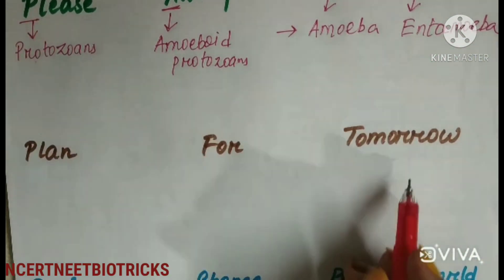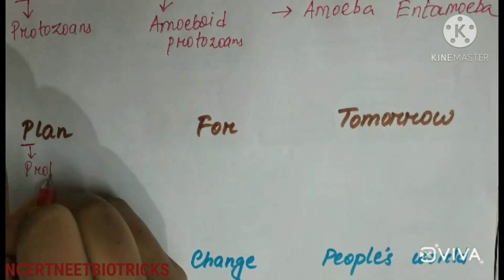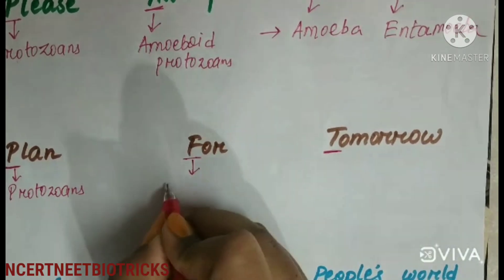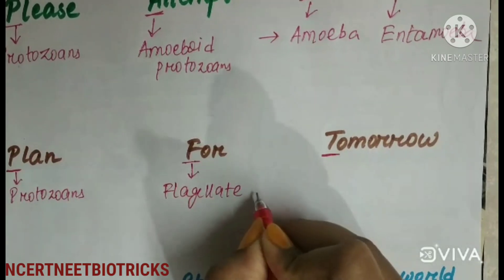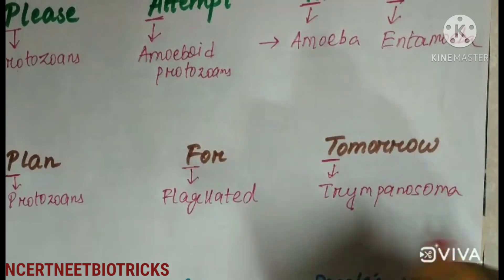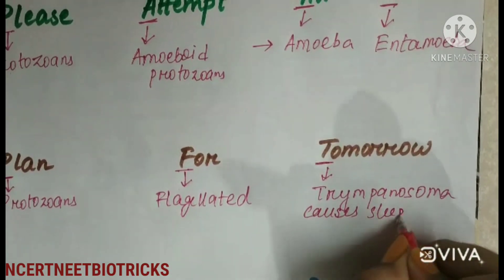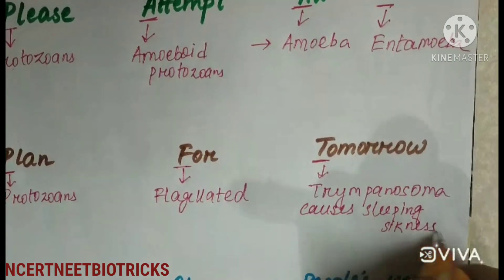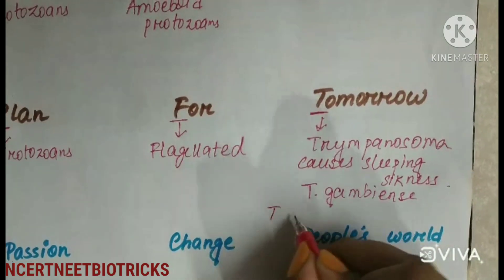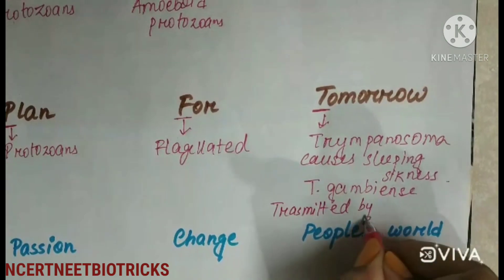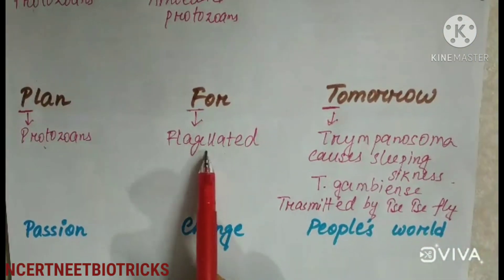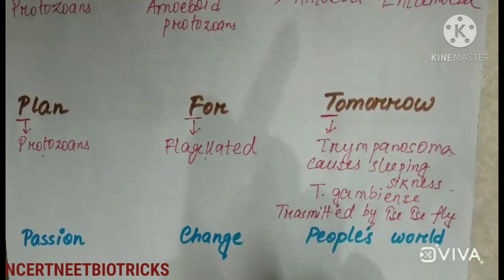The mnemonic 'plan for tomorrow' — P for Protozoans, F for Flagellated, T for Trypanosoma. Trypanosoma causes sleeping sickness. The species is Trypanosoma gambense, usually transmitted by the tsetse fly.